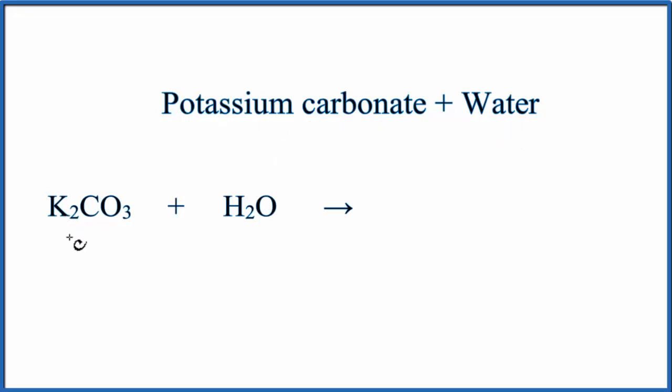Potassium's a metal, and then carbonate, the CO3, that's a group of non-metals. So when we have a metal and non-metals, we have an ionic compound.